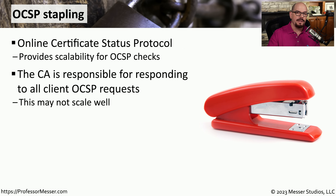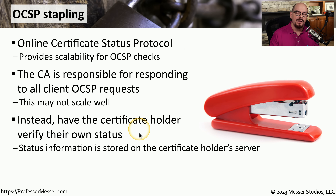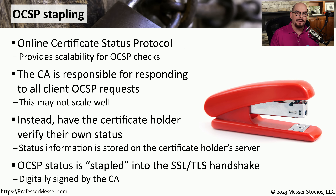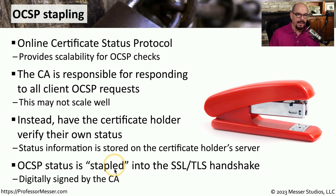Relying on the certificate authority to provide a list of all revocations to anyone visiting a website is inherently inefficient. To make this more efficient, we can put the status of our certificates onto our web server itself. This is accomplished by sending status messages about the validity of your certificate during the SSL handshake that occurs when you first connect to a web server. This is referred to as OCSP stapling, because we're embedding the status of the certificate within the handshake.